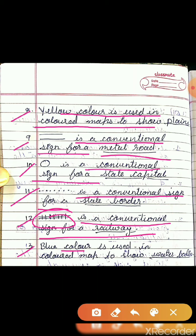Statement 13: Blue color is used in a color map to show blank. The answer is water bodies. So students, today in this video we have seen the multiple choice questions and fill in the blanks. You need to write it in your notebook by writing today's day and date.